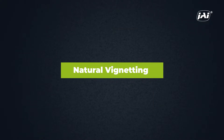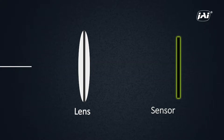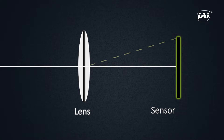Besides mechanical vignetting, another phenomenon referred to as natural vignetting or shading is simply due to the way light behaves as it passes through the lens to the sensor. While the light rays strike the center of the sensor perpendicularly, they must travel at an angle to reach the outer edges. The light hitting the edges has to travel a longer distance and strikes at more of an angle, causing it to become progressively dimmer.